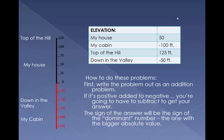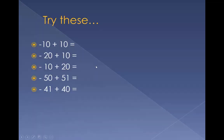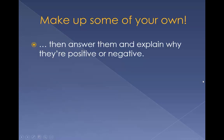So, how to do these problems? First, write the problem out as an addition problem. If it's positive added to negative, you're going to have to subtract to get your answer. The sign of the final answer will be the sign of the dominant number — the one with the bigger absolute value. Try these — it's a mixture. Pause, and then click through to get the answers. There they are. Then make up some of your own, answer them, and explain why they're positive or negative.